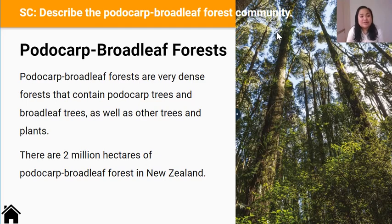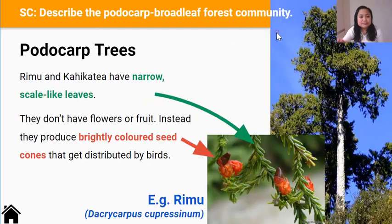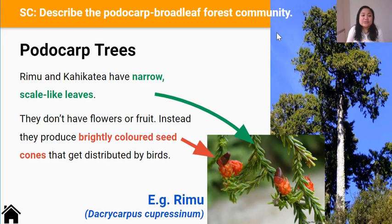It's a very dense forest that contains Podocarp trees and broadleaf trees among others. Podocarp trees like Rimu and Kahikatea have narrow scale-like leaves. They don't have flowers or fruit, but instead they produce brightly coloured seed cones to attract birds. If birds eat these seed cones, they will distribute the seeds throughout the forest through their poop.